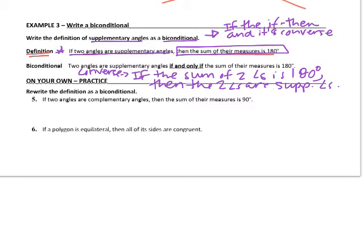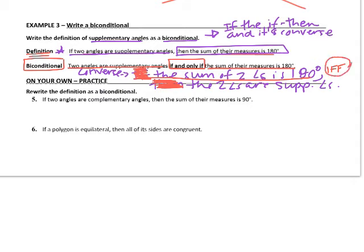The biconditional statement is: two angles are supplementary angles if and only if the sum of their measures is 180 degrees. We take the hypothesis, get rid of the word if, insert if and only if, get rid of the word then, and state the conclusion. Remember that IFF is the abbreviation for if and only if.